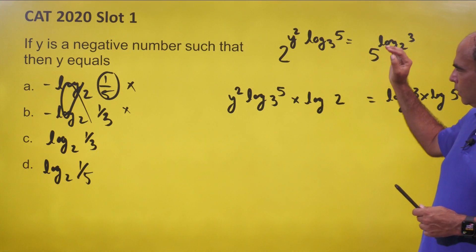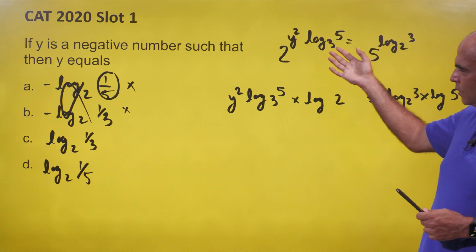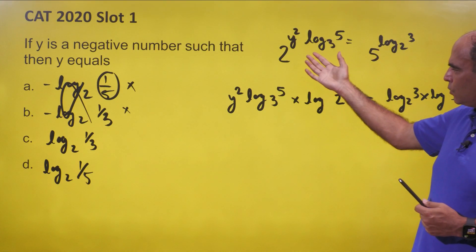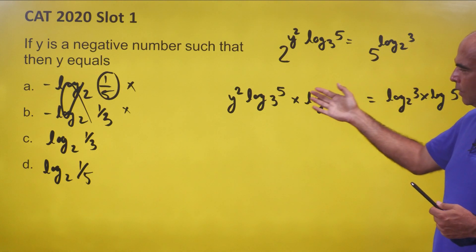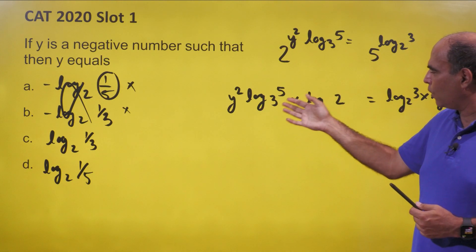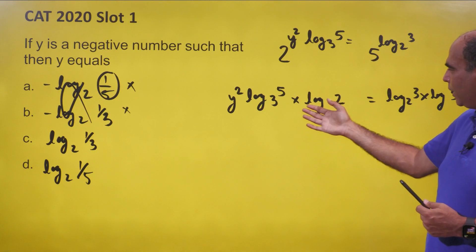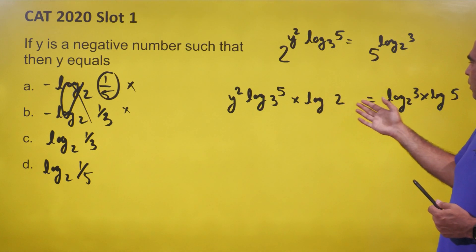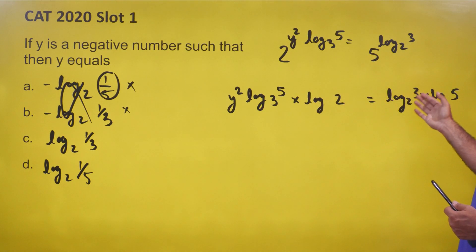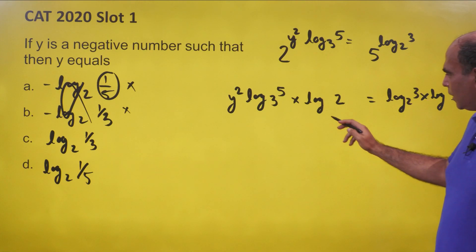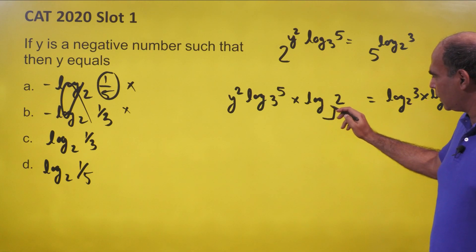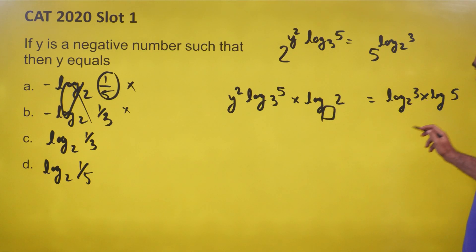For the other two options, you have to actually work through it. The first step — the first trigger — is to take logs on both sides. When I do that, I get: y² × log 5 to the base 3 × log 2 is equal to log 3 to the base 2 × log 5. The key decision in this question is what base to take.